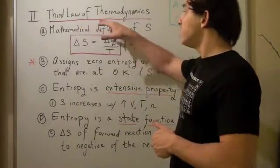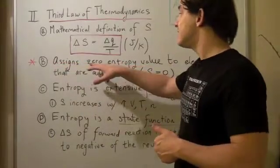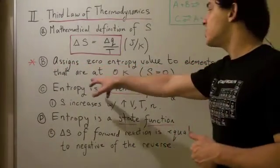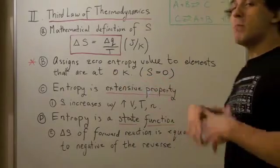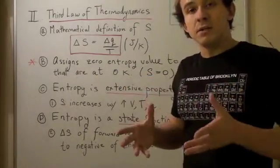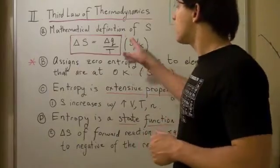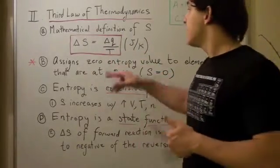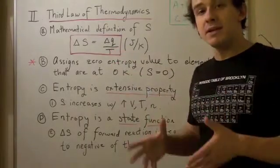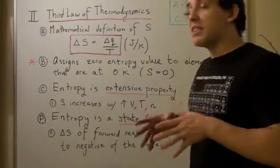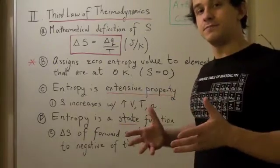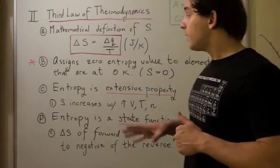What the third law does is it assigns a zero entropy value to all elements that are at zero Kelvin. But remember, zero Kelvin is unattainable, and let's see why. This formula says that if temperature was zero, the zero here would be in the denominator, and that's impossible mathematically because anything over zero is undefined.